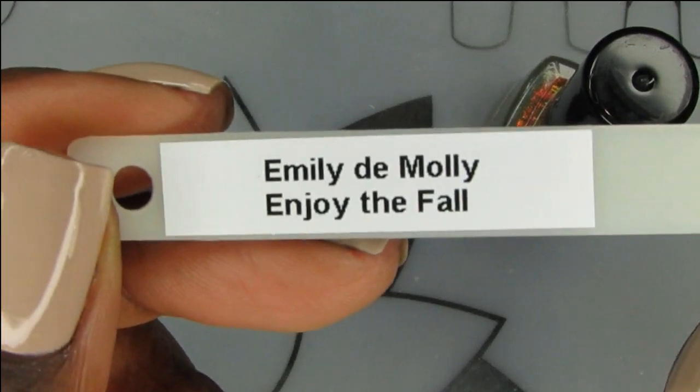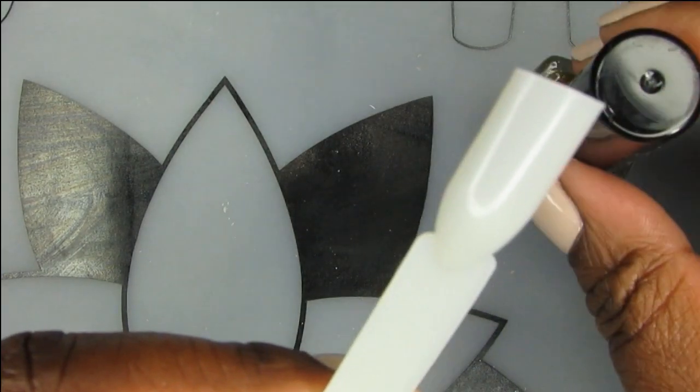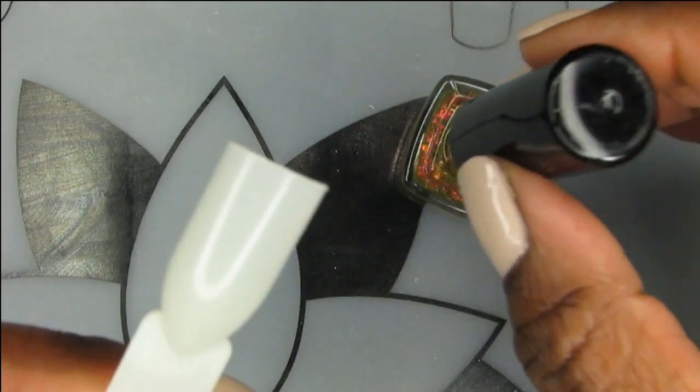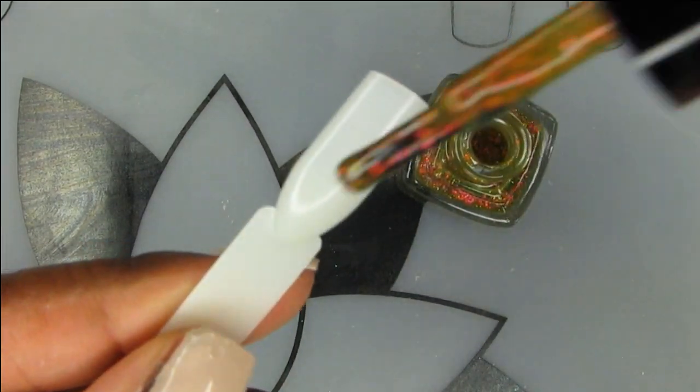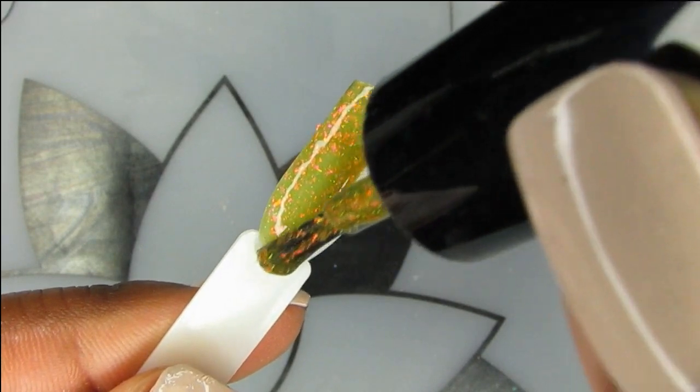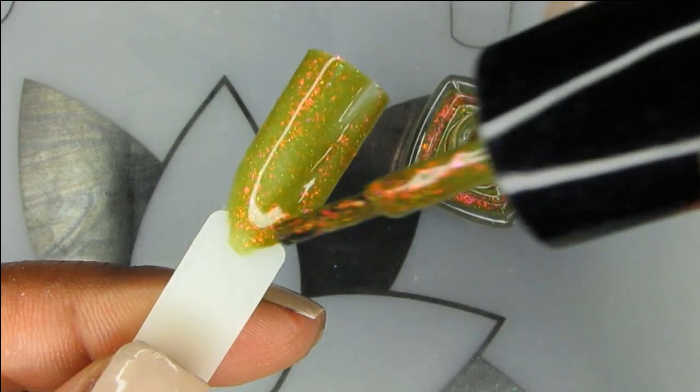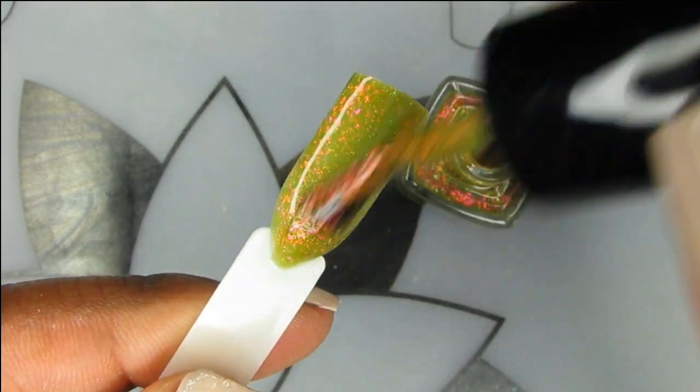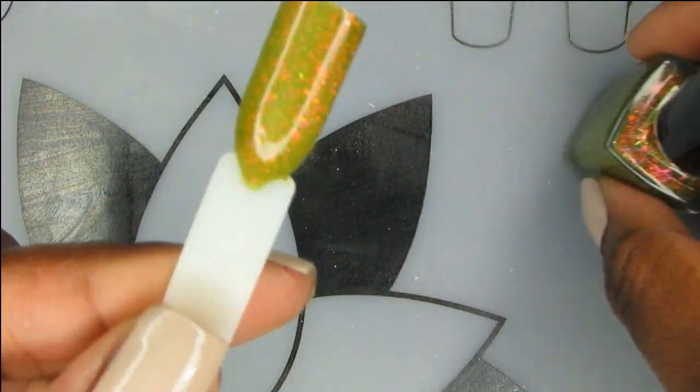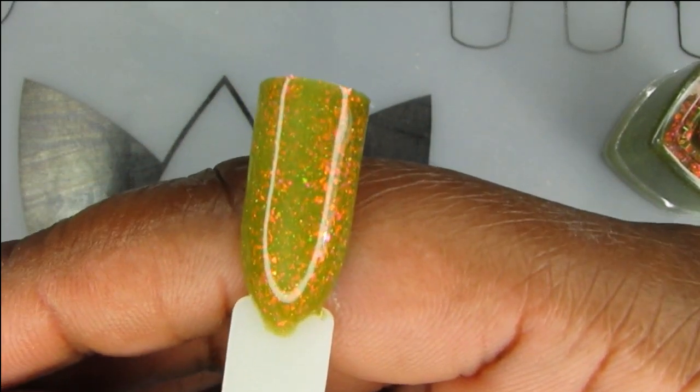Next we have Enjoy the Fall. Enjoy the Fall is a khaki green base with pink, gold, green shifting iridescent flakes, as well as gold holographic micro glitters. Ooh. Okay. I like this. It's an ugly green, so I'm definitely feeling this. You really get to see the pink and the gold. So far, so good. I feel like the flakies in here laid down very well. Super cute.